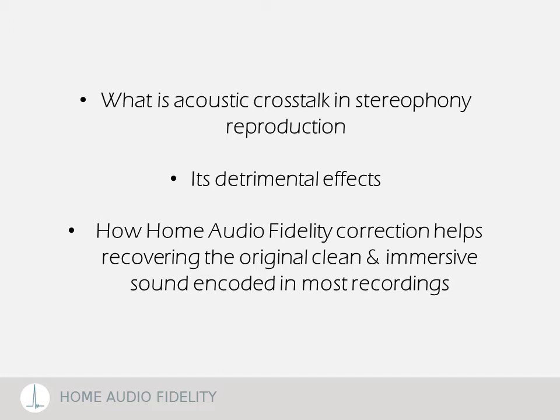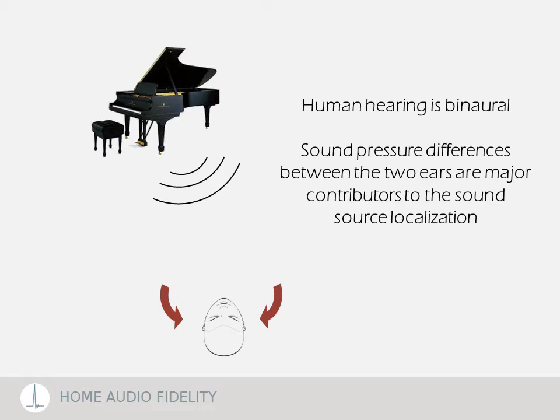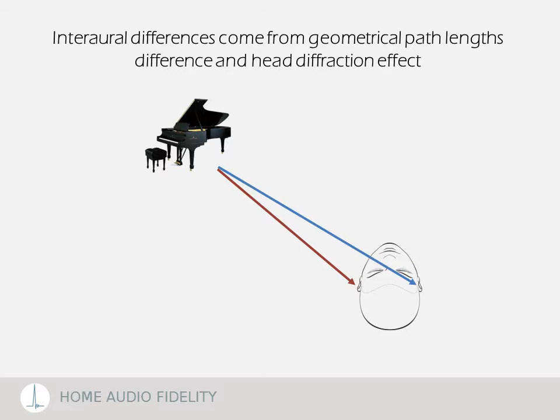The human auditory system is complex and we will only focus on important features related to crosstalk. One obvious one is that we have two ears. This feature is crucial for sound source localization. The differences between the sound waves reaching each ear are processed by our brain to determine the source position.